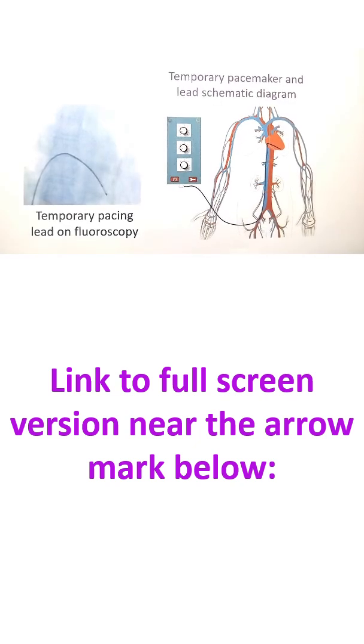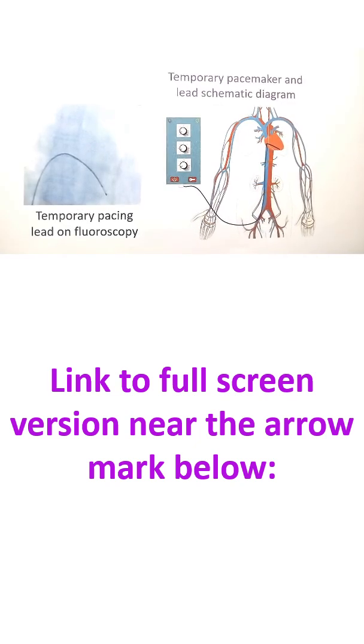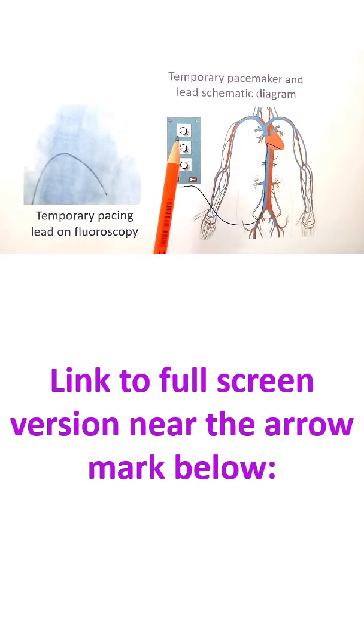Temporary pacing is often a life-saving procedure done in an emergency. This is the diagram of a temporary pacemaker kept outside with controls including an on-off switch and lock switch.